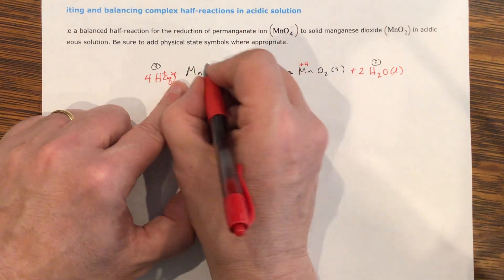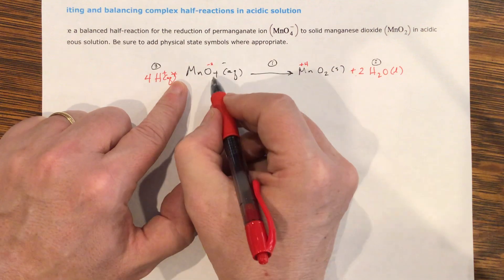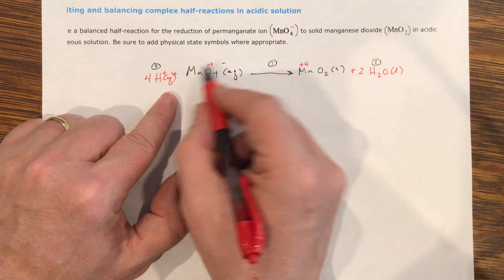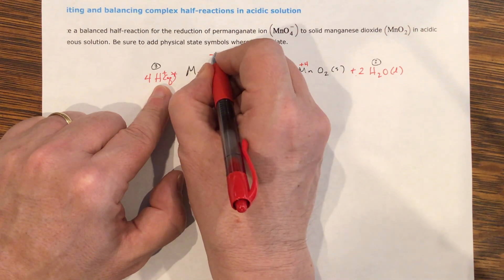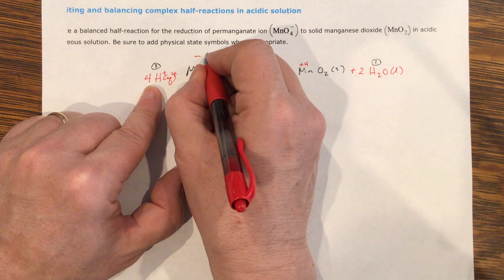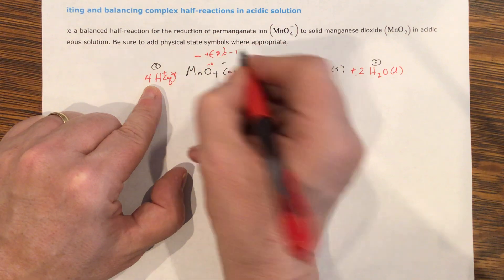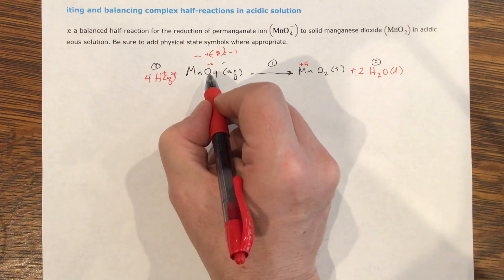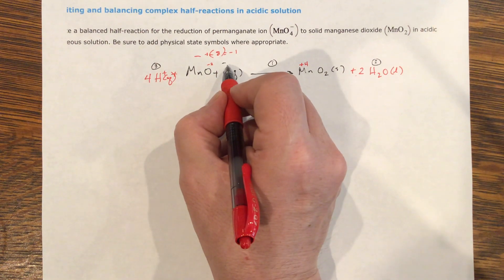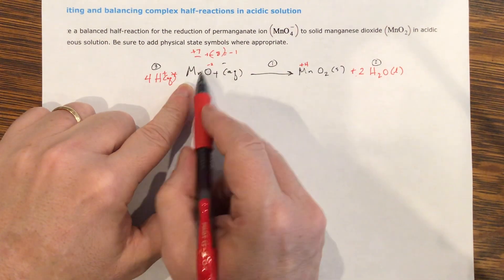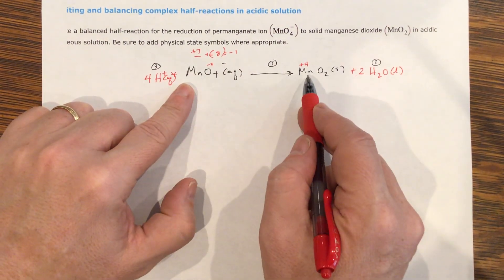Over here, this is negative two, and negative two times four is negative eight, and the whole thing is an ion. So I have to say what plus a negative eight gives me a negative one. What plus a negative eight gives me a negative one, and I see that it has to be a seven, positive seven. So I went from positive seven to positive four.